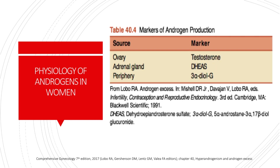This table shows the markers of androgen production per source. If testosterone levels are very high in the bloodstream, then most likely the source of androgen production is the ovary. If DHT levels are high, then most likely the source would be the adrenal gland. And if there are elevated levels of 3-alpha-diol-G, then most likely the source of androgen production is the peripheral tissues.